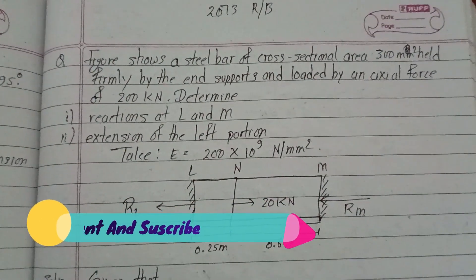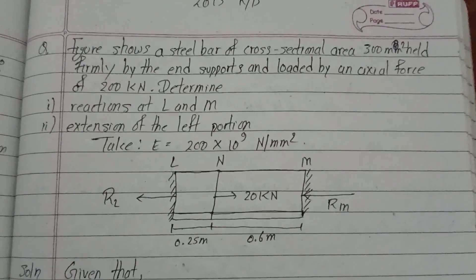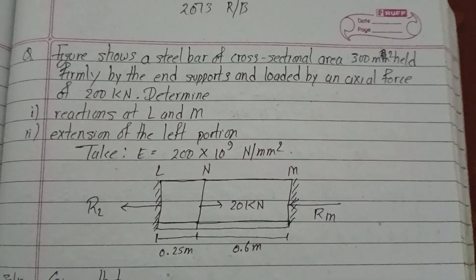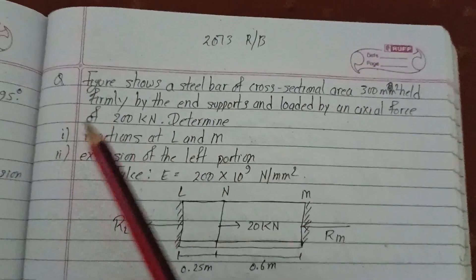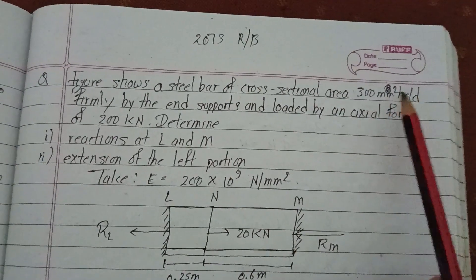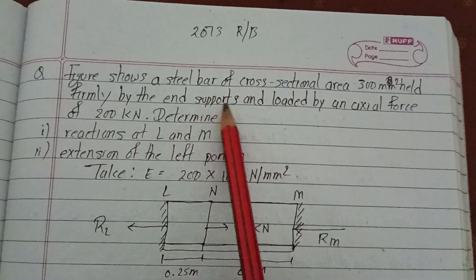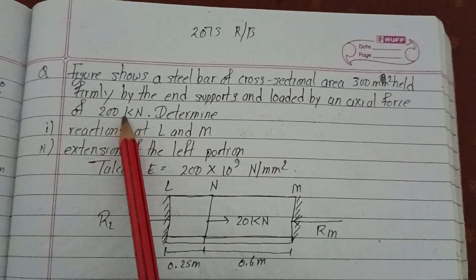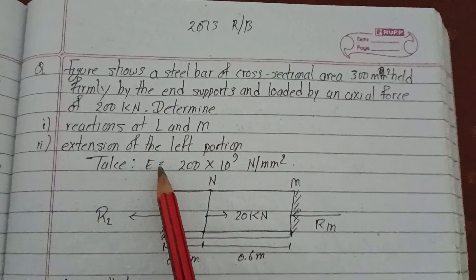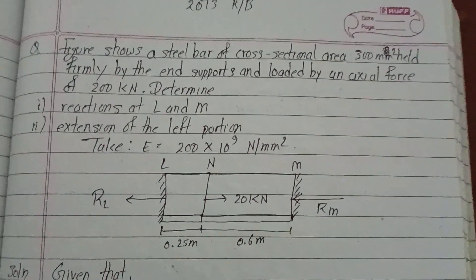Hello everyone, welcome back to our channel. I am here to cover the mechanics of structure. We have a 7-3 regular problem. The question shows the steel bar of cross-sectional area 300 mm² held firmly by end supports and loaded with an axial force of 200 kilo Newtons. Determine the reaction at L and M, and the extension of the left portion. Take E equals 200 into 10 to the power 9 Newton per mm².